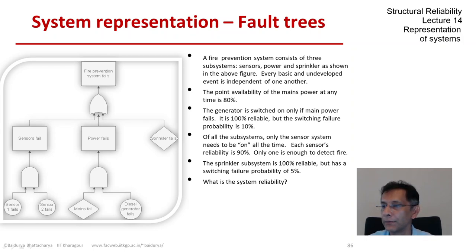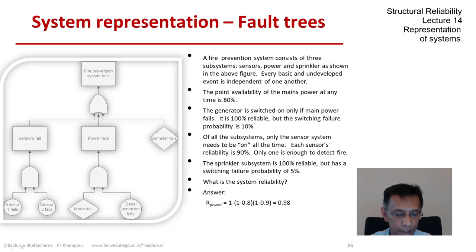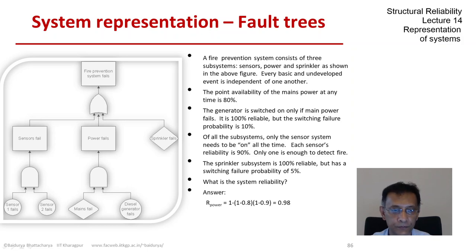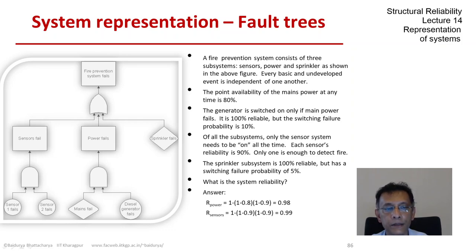What is the system reliability? It's a straightforward problem — we have solved many problems like this already in this course. The power system reliability is 98%. The first term in the brackets comes from the main power availability; the second bracketed term comes from the diesel generator — its switching failure probability is the only contribution there. The next one is the sensor system: there are two sensors working independently, and together the sensor system has 99% reliability.